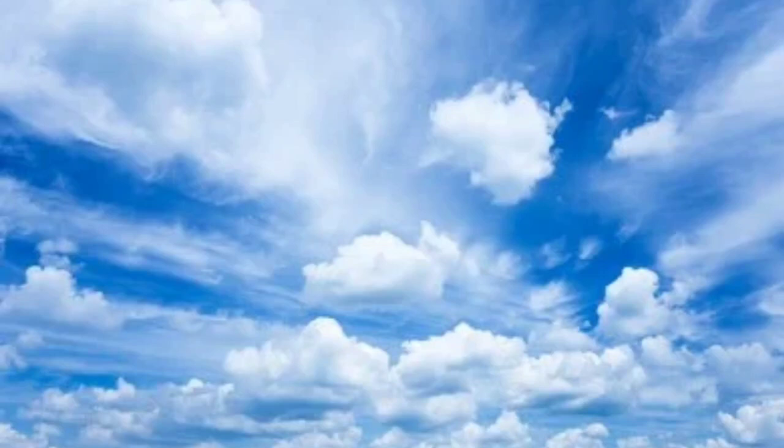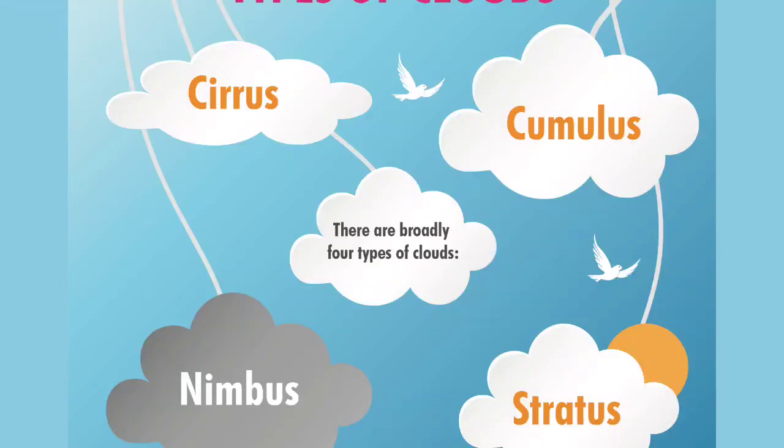The clouds that form in the atmosphere at different levels are of different shapes and sizes. According to their height, expanse, density, and transparency or opaqueness, clouds are grouped under four main types: cirrus clouds, cumulus clouds, stratus clouds, and nimbus clouds.